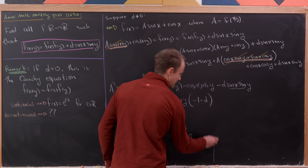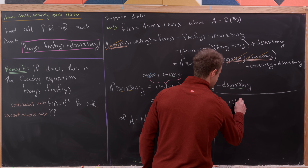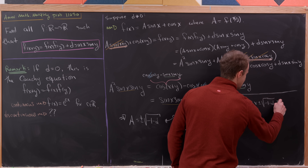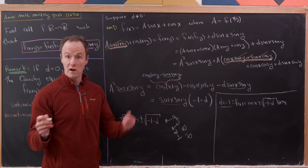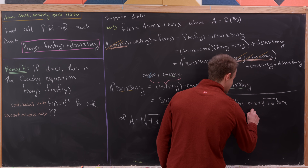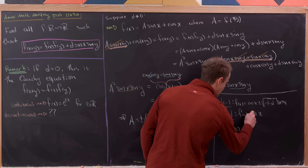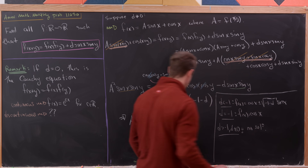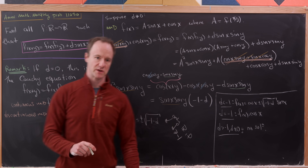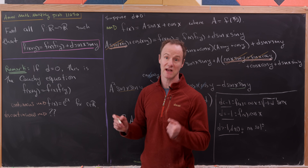To summarize: if d < −1, there are two solutions f(x) = cos(x) ± √(−1−d)·sin(x). If d = −1, there is one solution: f(x) = cos(x). If d > −1 and d ≠ 0, there is no real solution. This covers all cases, including the d = 0 Cauchy equation case.